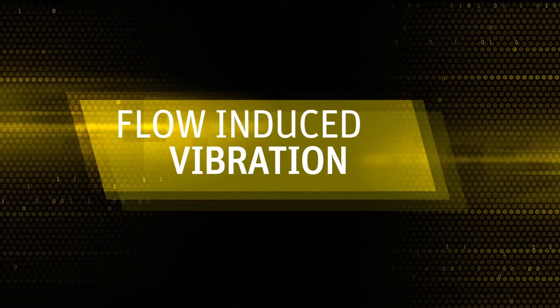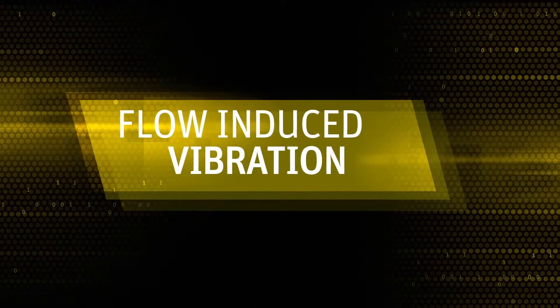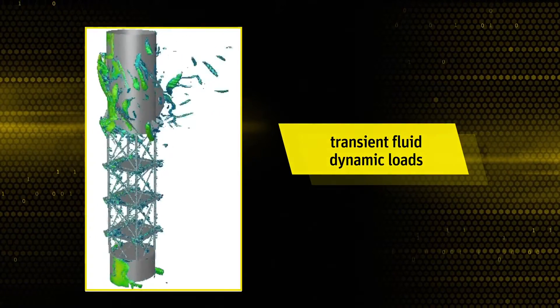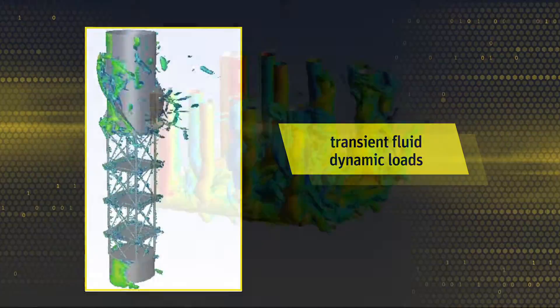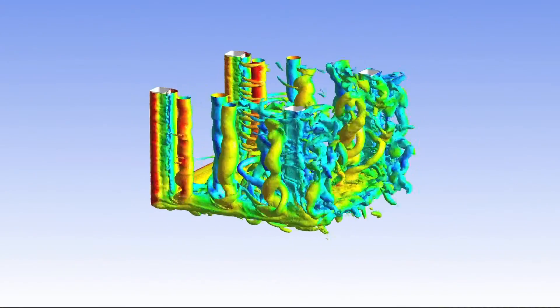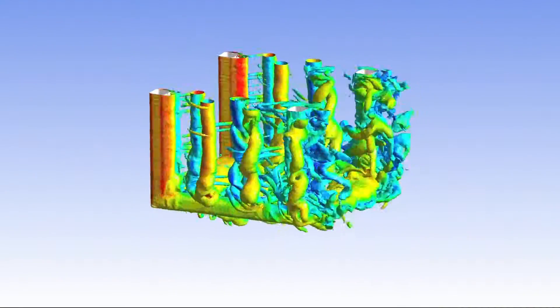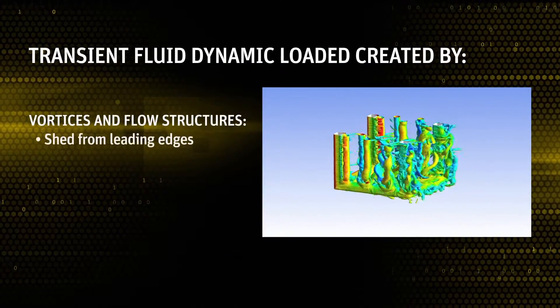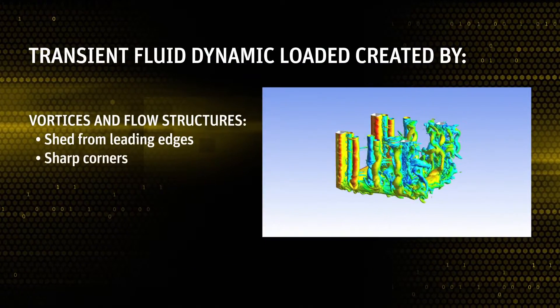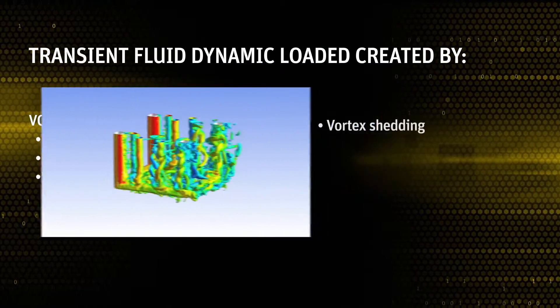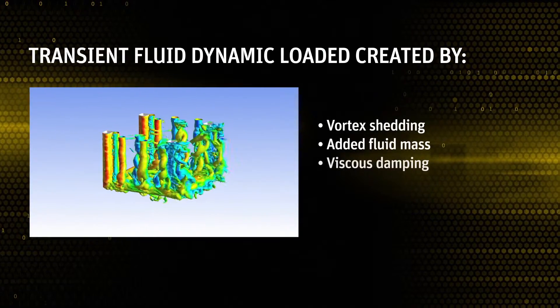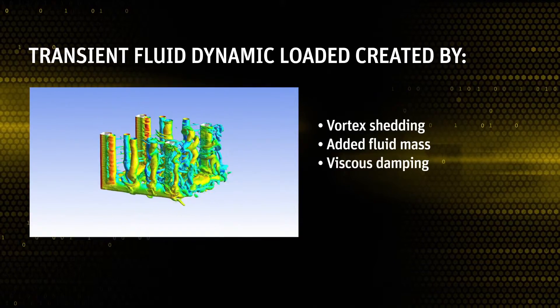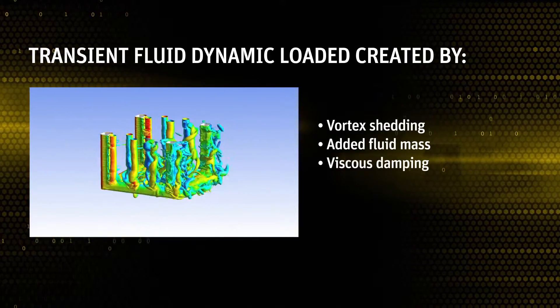Flow-induced vibration and vortex-induced vibration are structural responses created by transient fluid dynamic loads. Vortices and other flow structures creating the fluid dynamic loads are from vortices shed from leading edges, sharp corners, and in the wake of structures. The vortex shedding as well as the added fluid mass and the viscous damping create complex engineering fluid and structural problems.